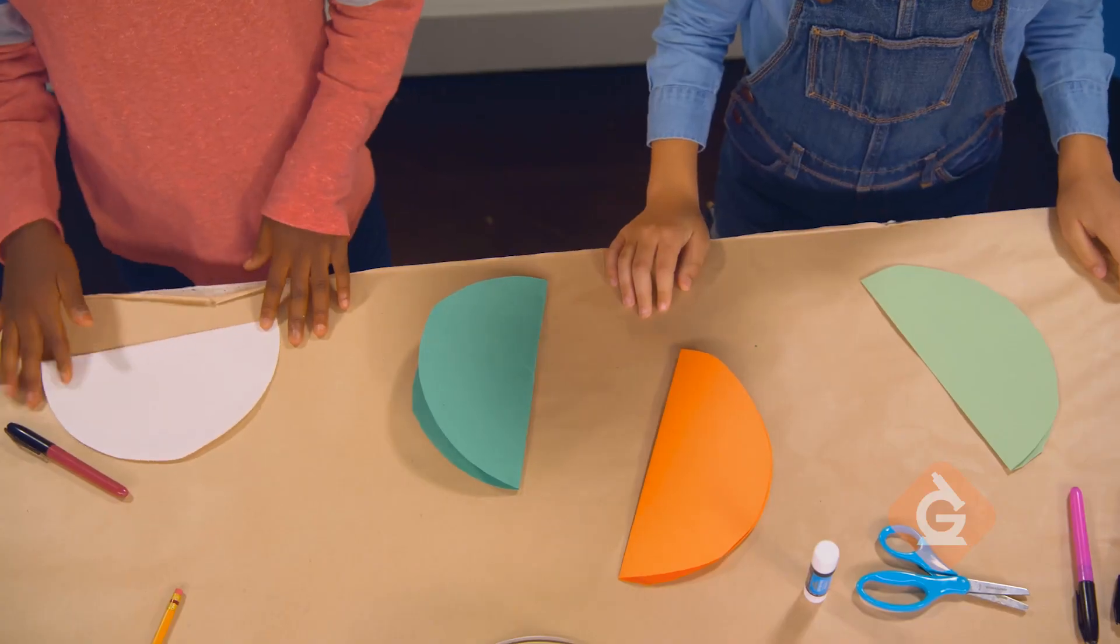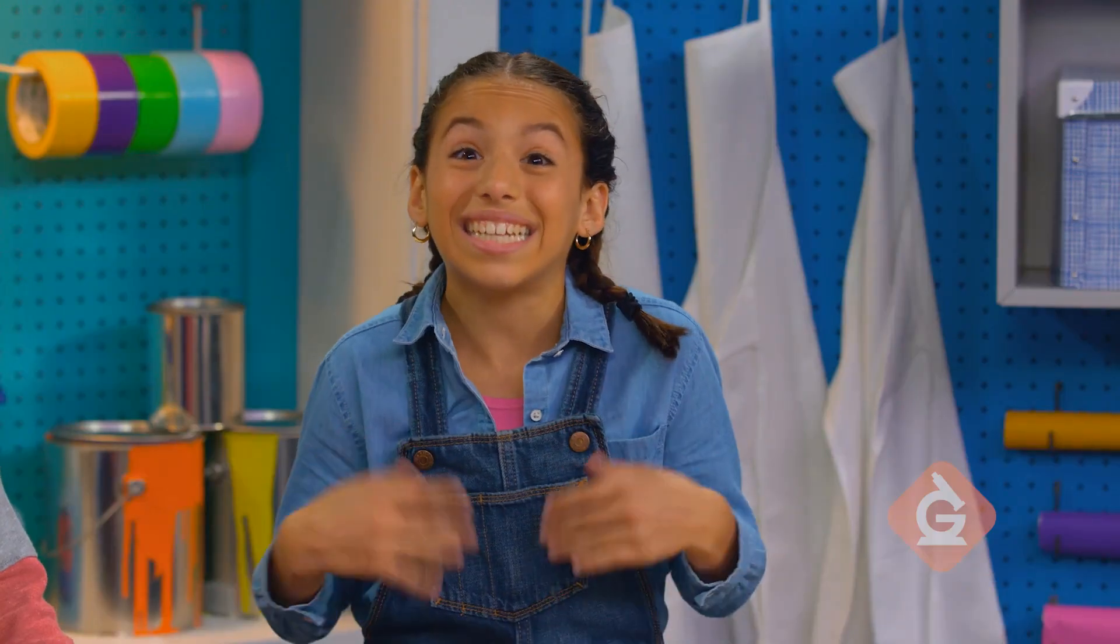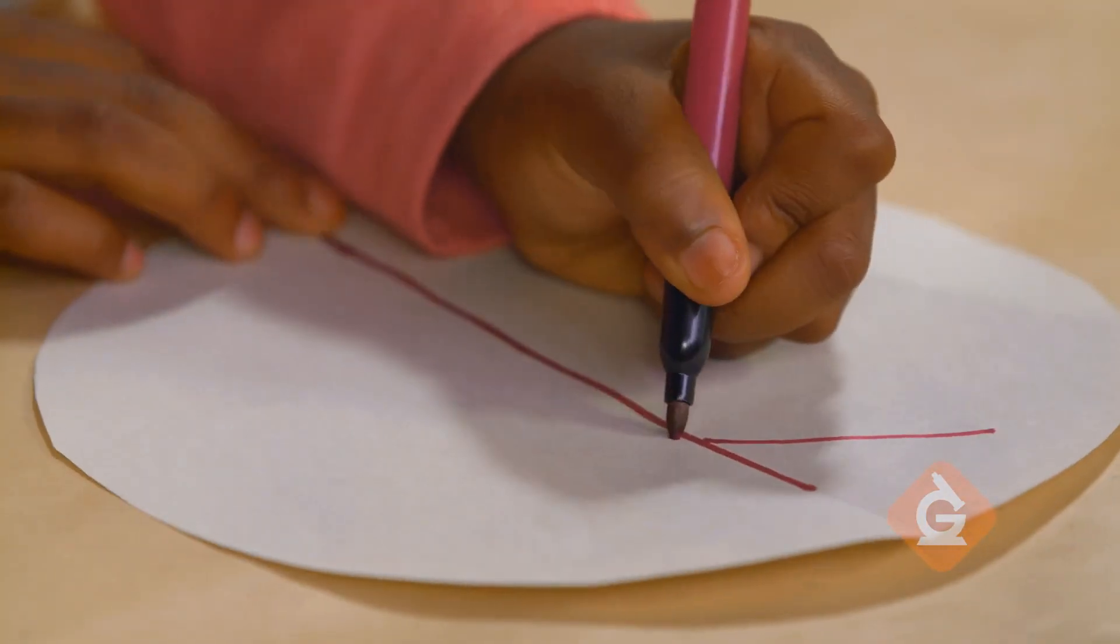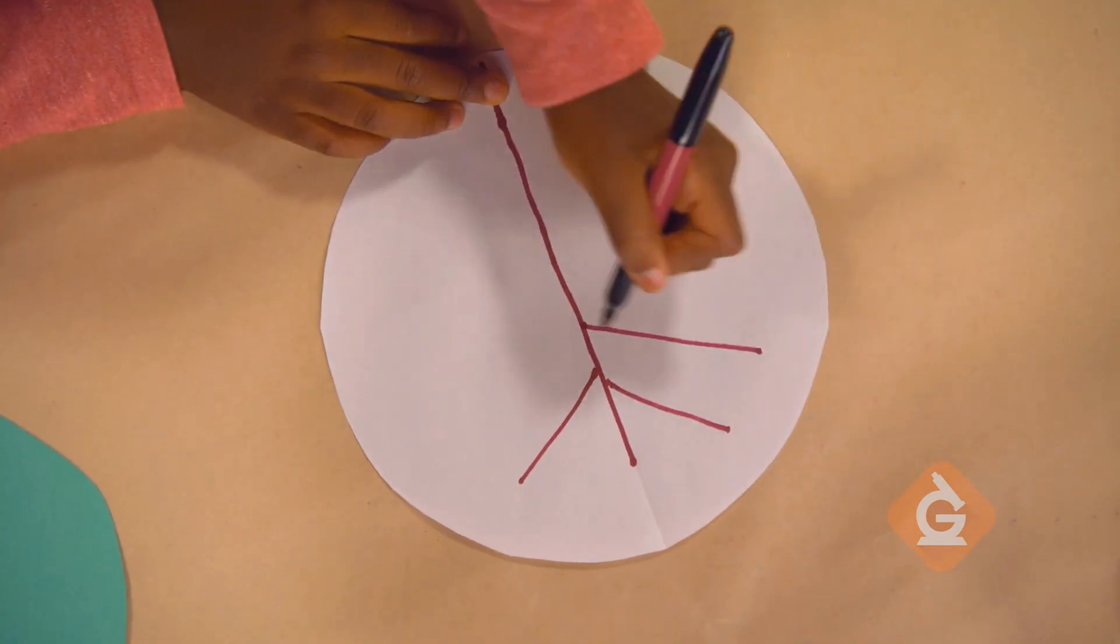Then, decorate each section to look like the season it represents. White will be winter, the white represents snow, and the tree branches will have no leaves on them.